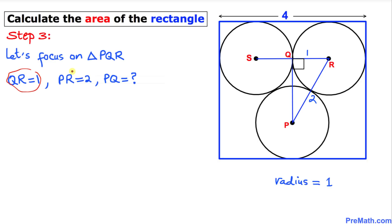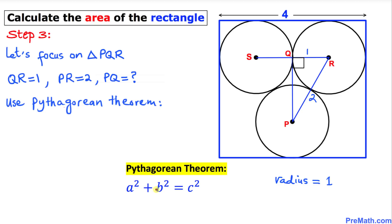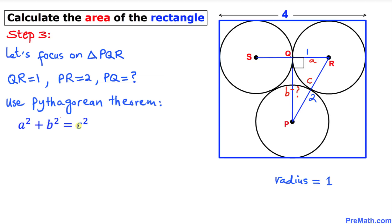Now we calculate PQ. Triangle PQR is a right angle triangle, so we use the Pythagorean theorem: a² + b² = c². I'll call QR side a, PR side c (the hypotenuse), and PQ side b. We need to find the value of b.